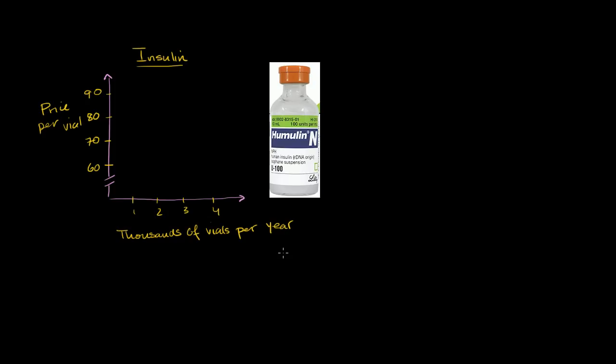It almost has an infinite marginal benefit for them. They're willing, no matter what the price, to take the insulin that they need to take. For example, even if the price of insulin were $1, if the doctors in this town say collectively all the diabetics need 3,000 vials a year, they will take 3,000 vials a year.